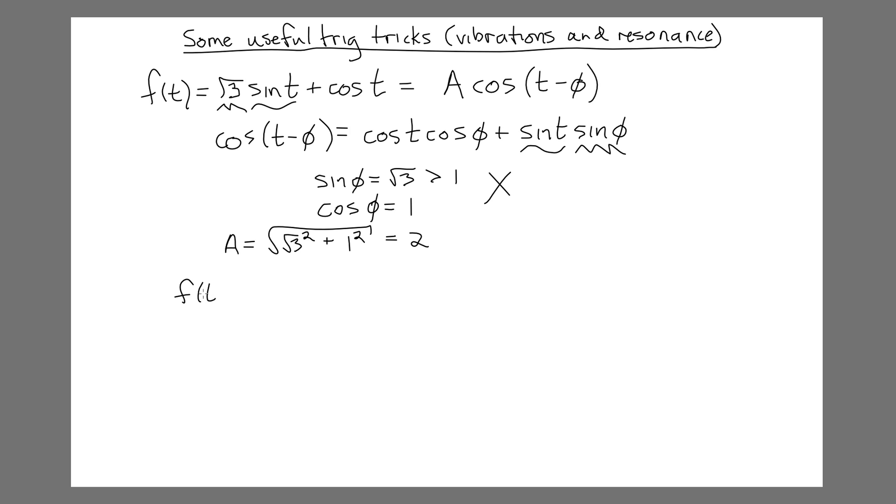and rewrite f of t as 2, the amplitude, multiplied by root 3 over 2, so that if we were to multiply it through, we would still have that root 3 sine t, plus 1 half, and again, if we were to multiply that through, we'd get 1 times cosine t, so this expression is exactly the one that we had before, but now we have the amplitude out in front, and we have numbers here that you'll notice when squared and added give me 1, and that's exactly what I want in order to turn one of them into a sine value and the other into a cosine value.